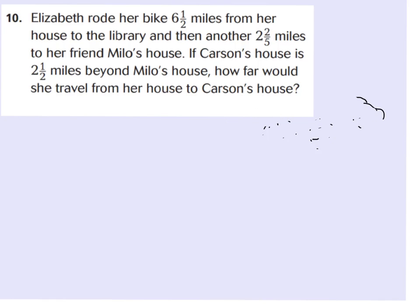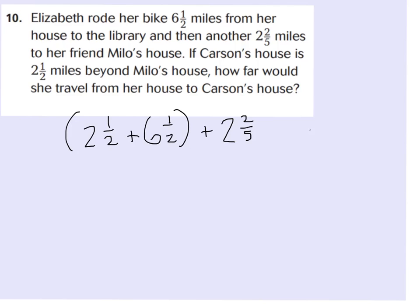Let's set it up. Because of the commutative property you can put addends in any order. I'll group 2 and a half plus 6 and one half inside parentheses first, because that'll save a step. 2 and one half plus 6 and one half: a half plus a half is a whole, plus 2 wholes plus 6 wholes is 9 wholes. Then 9 plus 2 and 2 fifths gives a final answer of 11 and 2 fifths.